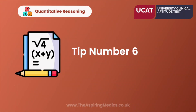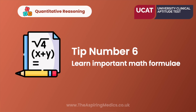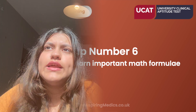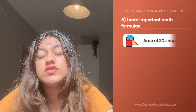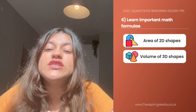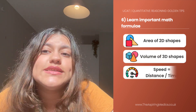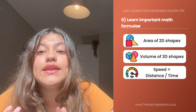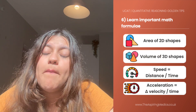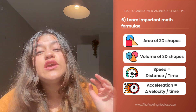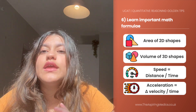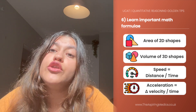Our sixth tip is to learn important math formulae. These include finding the areas of particular shapes and volumes of 3D objects, as well as speed equals distance over time and the formula for acceleration. These are key formulae that you should definitely know and learn for your UCAT exam.